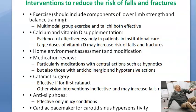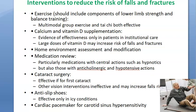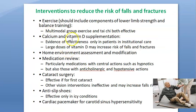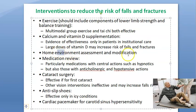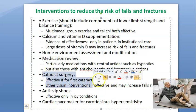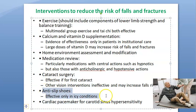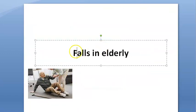To stop falls in the elderly: exercise, give vitamins, do a home assessment for home safety, and review their medications. Cataract surgery can help if the eye has lens opacity. Anti-slip shoes and a cardiac pacemaker can be fitted in case they have any cardiac rhythm abnormality.